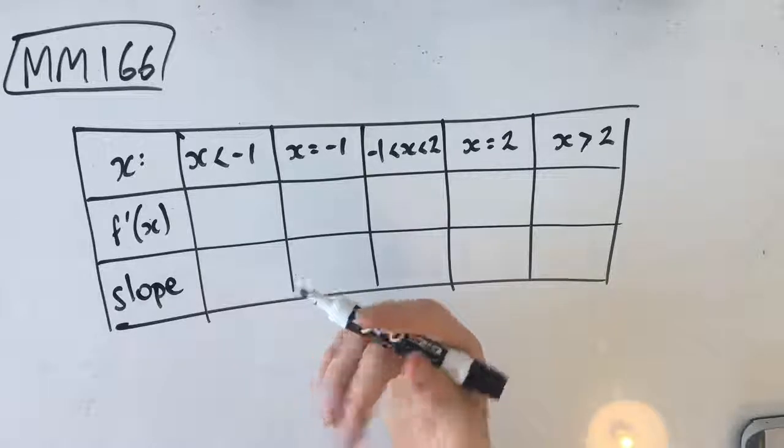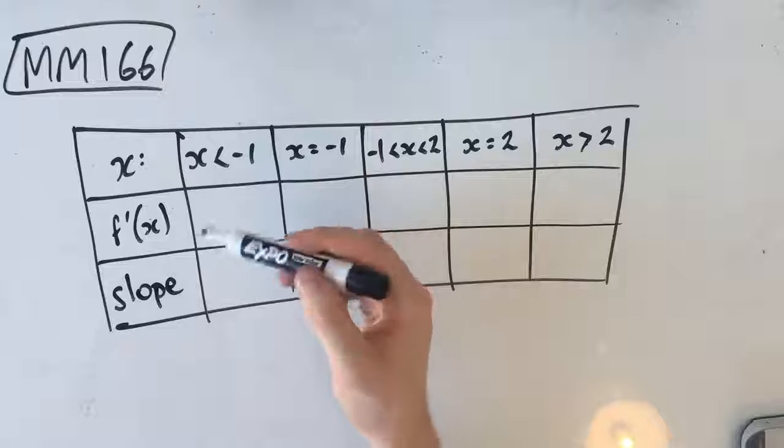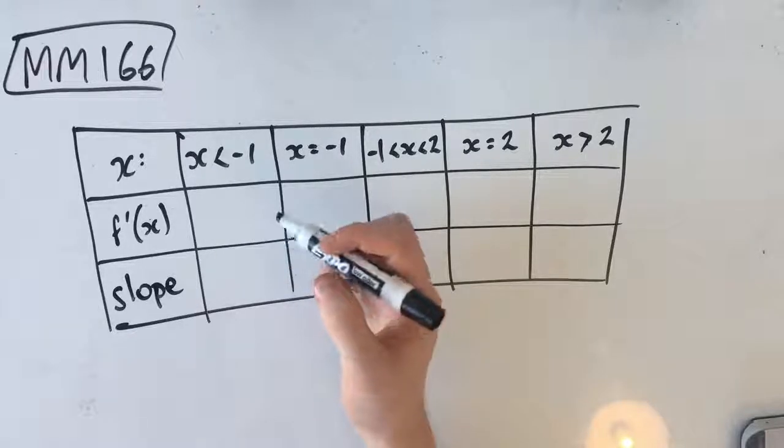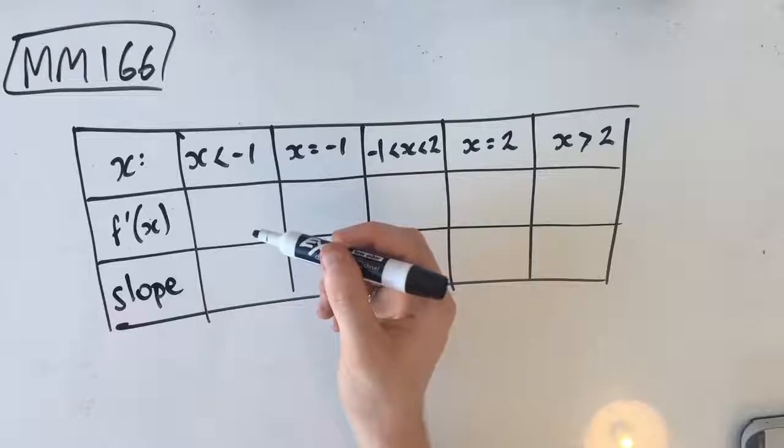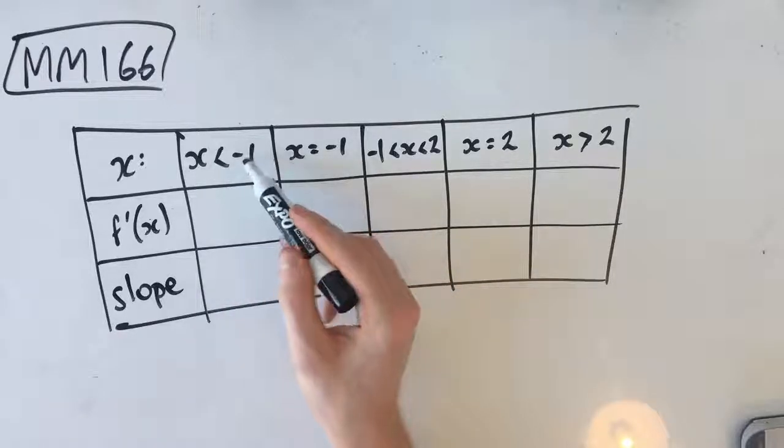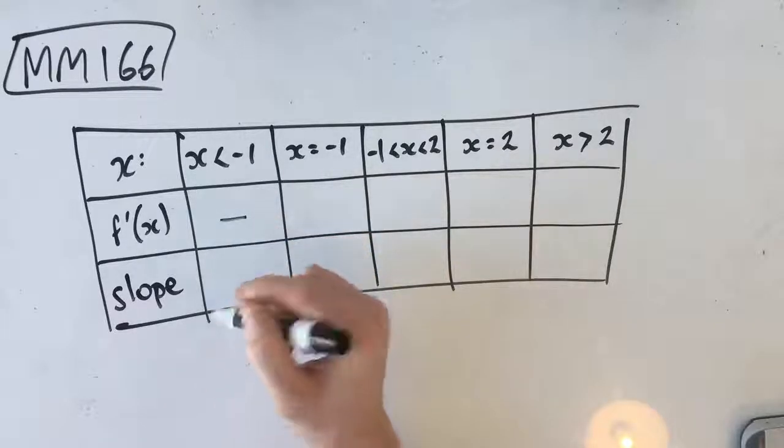So let's just work down the list and use our gradient table to fill in the blanks. Our first condition says that f dash of x is less than 0 where x is less than negative 1. So where x is less than negative 1, our gradient is less than 0, which means that it's negative. So I'm going to put a little negative here.